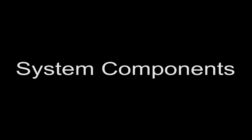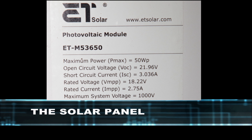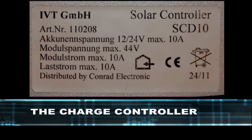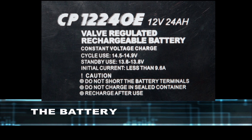A solar panel from ET Solar with a maximum power of 50W and a short circuit current of around 3A, a charge controller from IVT Solar that can handle up to 10A, and a Konrad Electronics 12V acid LED battery with a capacity of 24Ah.